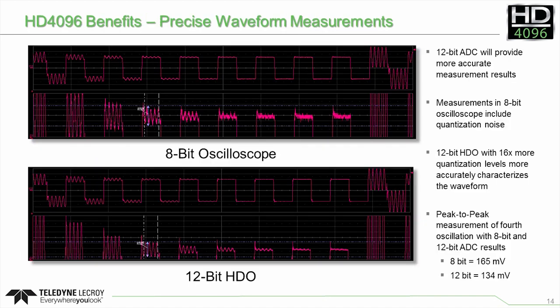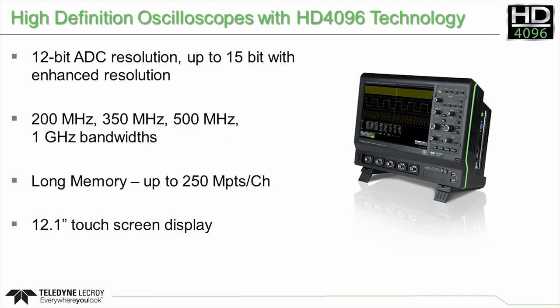HD4096 technology also improves measurement precision. The peak-to-peak measurement of this signal is displayed at 165 mV by the 8-bit oscilloscope. The same measurement on the same signal captured by the 12-bit high-definition oscilloscope is displayed at 134 mV. Teledyne LeCroy's high-definition oscilloscopes with HD4096 technology provide 12-bit resolution at 2.5 gigasamples per second, with up to 15 bits using enhanced resolution mode.